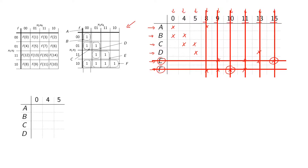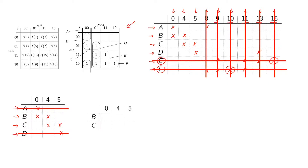We write a cleaner version of the reduced prime table and look at dominating rows. Row b dominates row a because all the x's in a also exist in row b. Similarly, row c dominates row d because all the x's in d are also contained in row c. So we can exclude rows a and d from our prime table. The new prime table has row b covering minterms 0 and 4, and row c covering minterms 4 and 5.